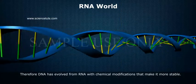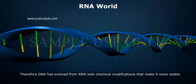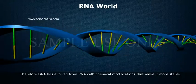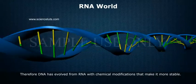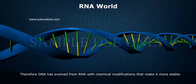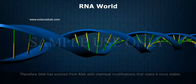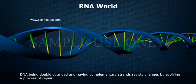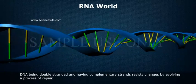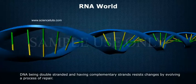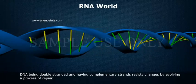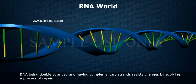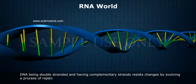Therefore, DNA has evolved from RNA with chemical modifications that make it more stable. DNA being double-stranded and having complementary strands resists changes by evolving a process of repair.